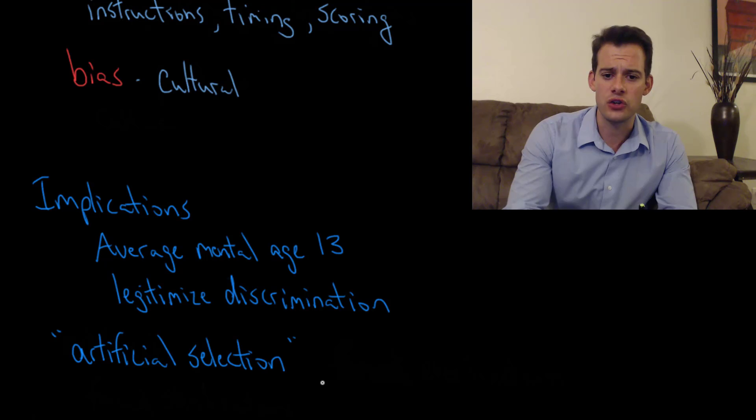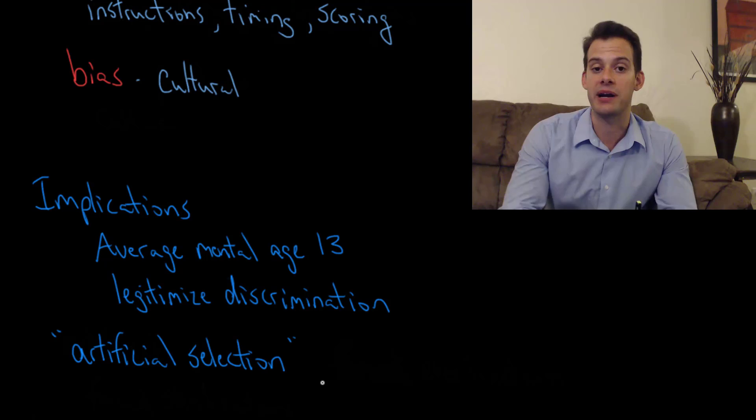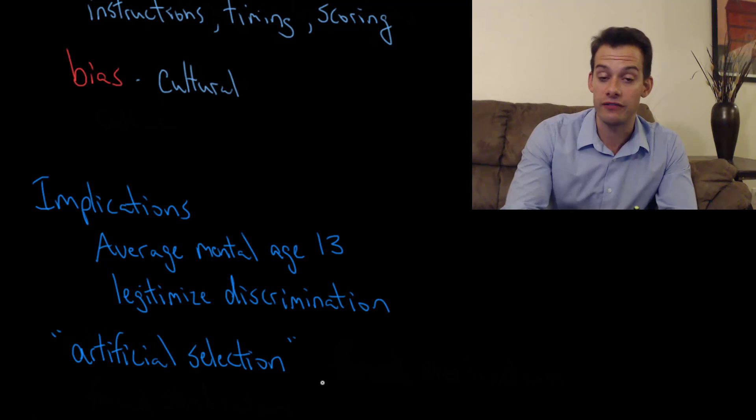One of the things that Gould suggests was related to these group differences is that eugenicists often referred to these results to justify discriminatory practices, such as the Immigration Act of 1924, which restricted the immigration of people from Southern European countries on the basis that they were intellectually inferior. And therefore, they needed to be kept out of the country because they were dumbing it down, that they were going to come here and reduce the average mental age of the United States.